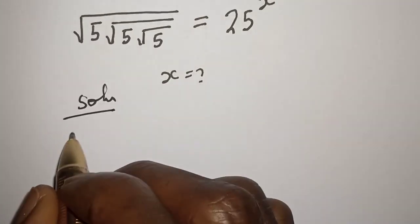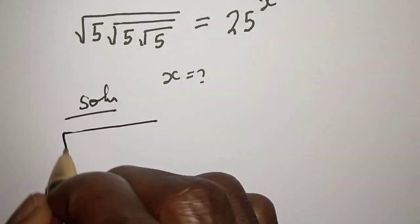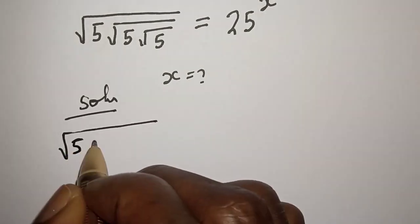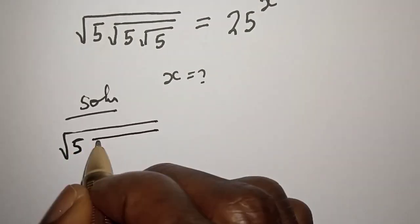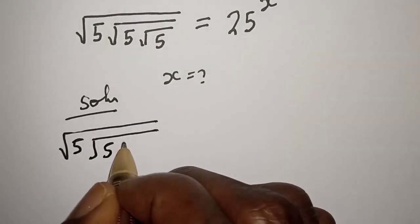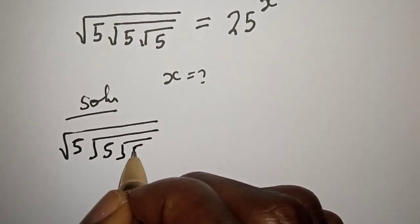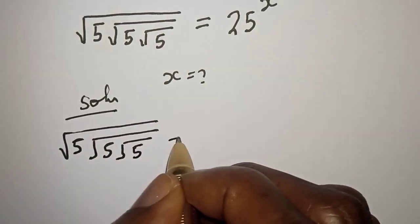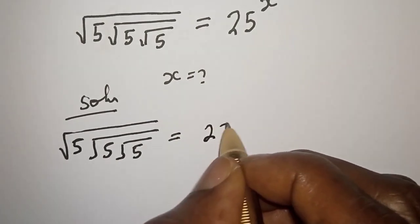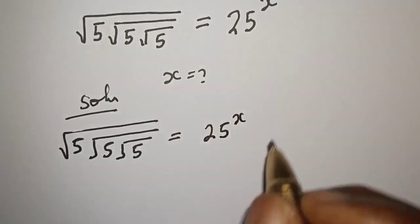We have the given equation: square root of 5, square root of 5, square root of 5 is equal to 25 raised to power x.